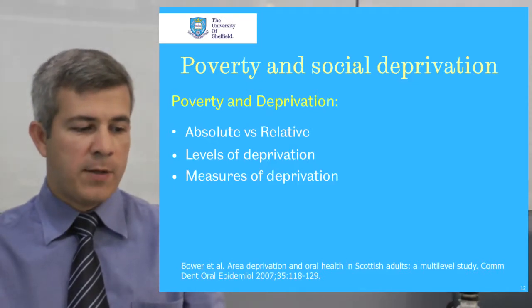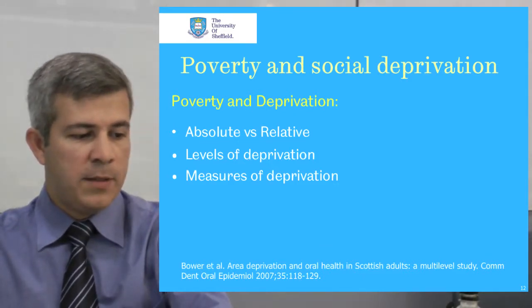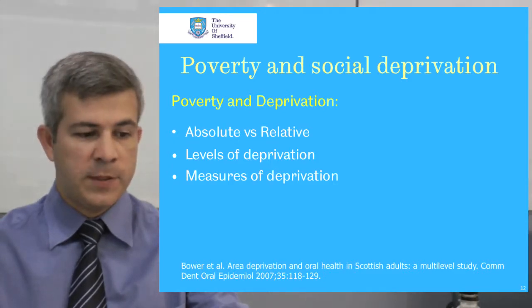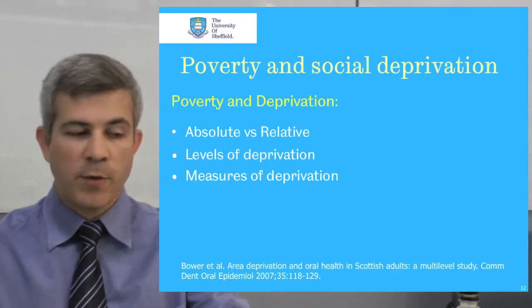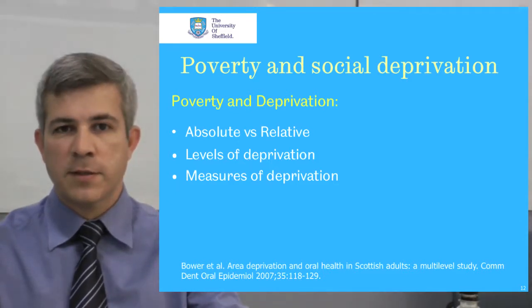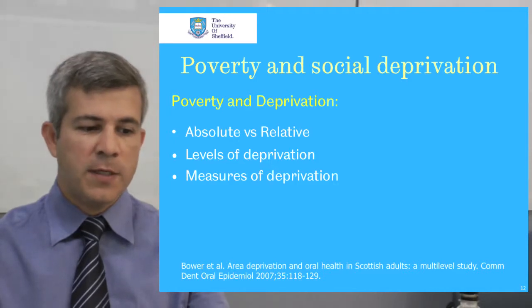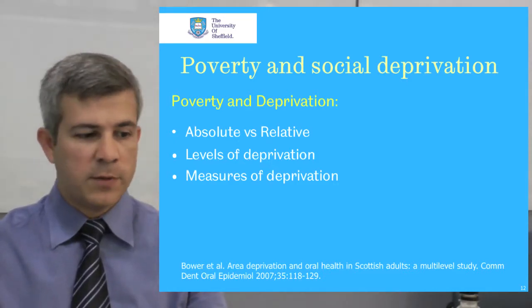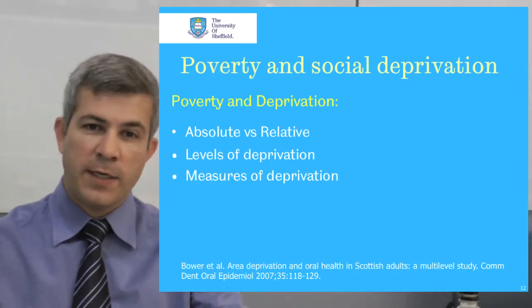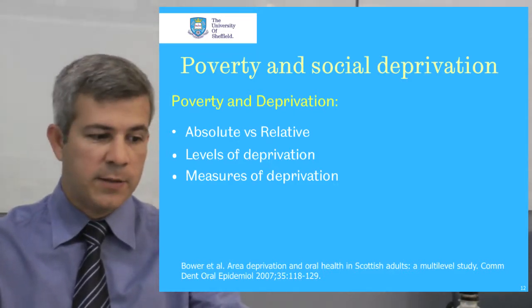When we think about poverty and social deprivation, some concepts must be clarified. The distinction between absolute poverty and relative poverty is one of these. Absolute poverty is the number of people living below a certain income threshold, or the number of households unable to afford certain basic goods and services. It takes a universal perspective and defines poverty in terms of a given level of income or consumption, usually by defining a poverty line as the lowest amount of money sufficient to purchase a minimally adequate diet and still have enough left for other essentials.